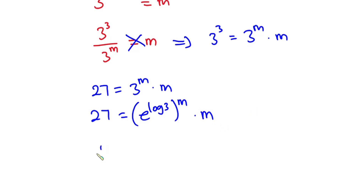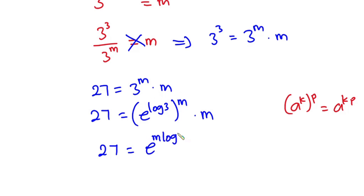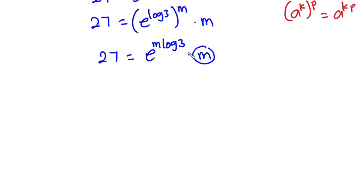From here we have 27 equal to m times 3 to the power m. From the laws of indices, if we have a to the power k times a to the power p, this is the same as a to the power kp. So this means I can write 3 to the power m using logarithms: we express this so that m log 3 appears in the exponent.